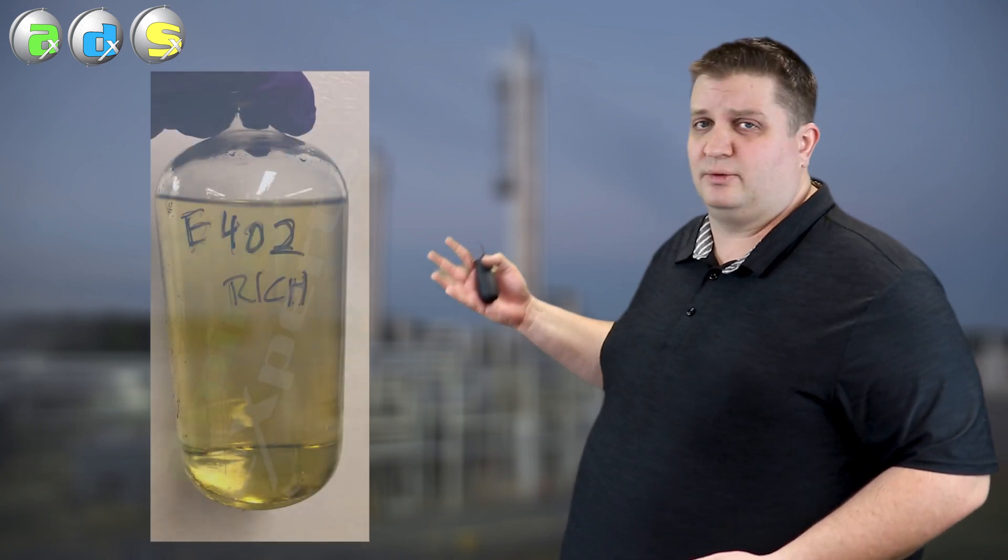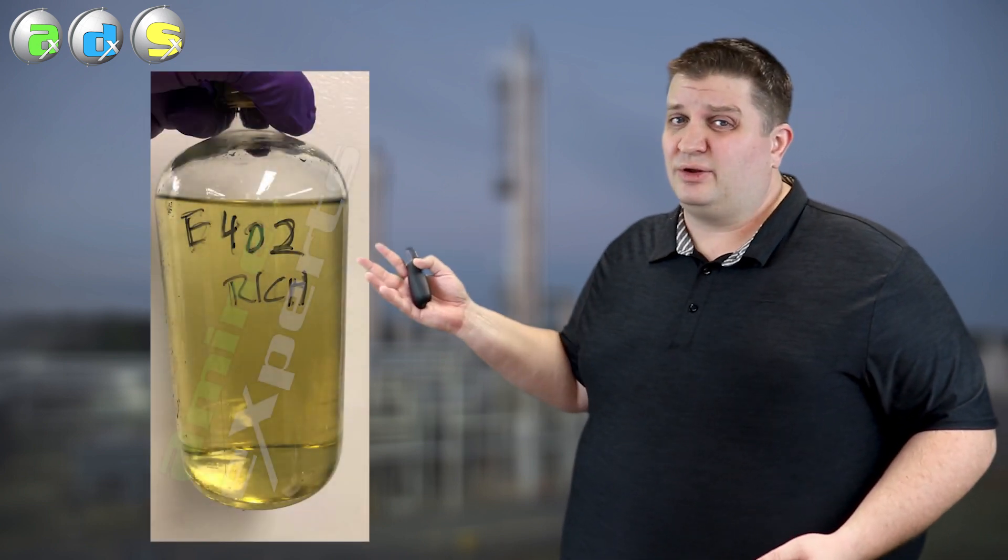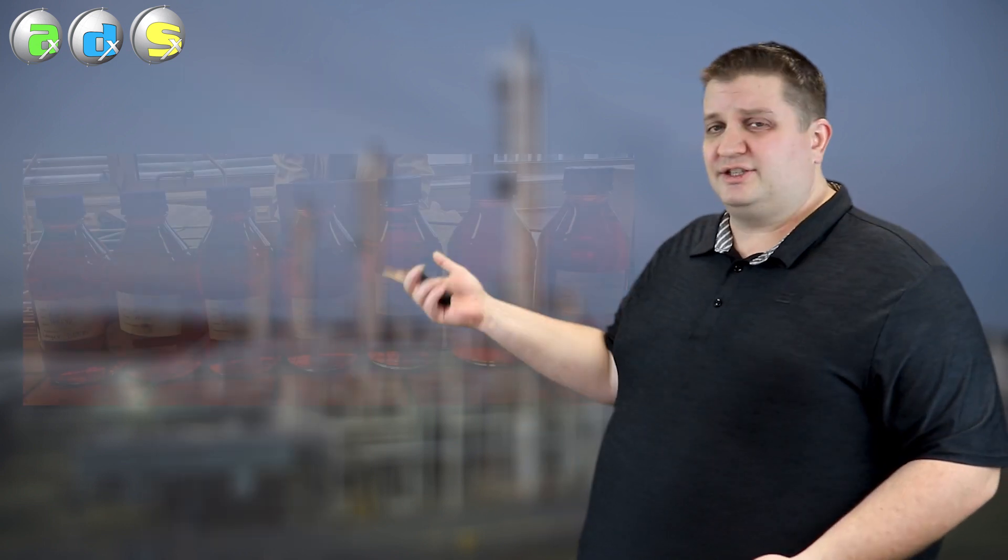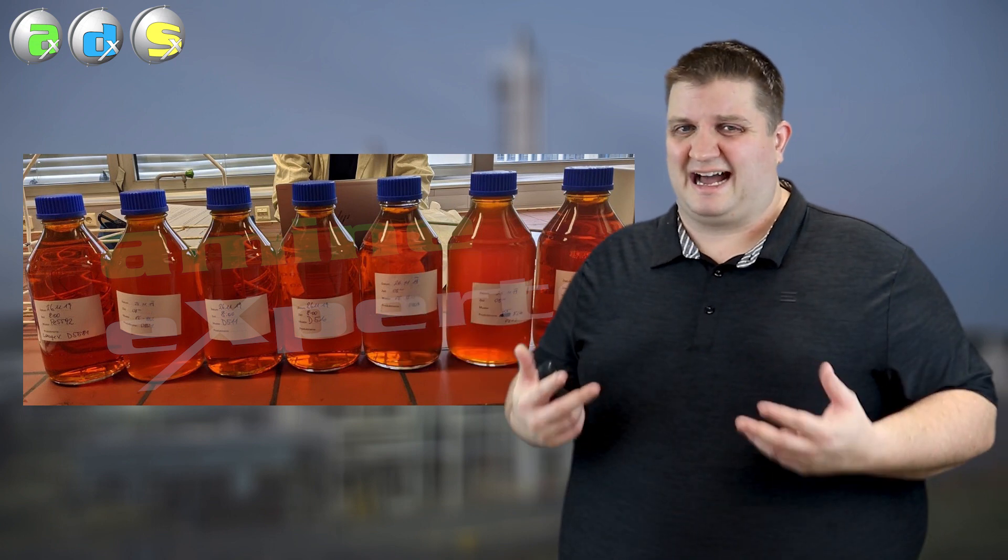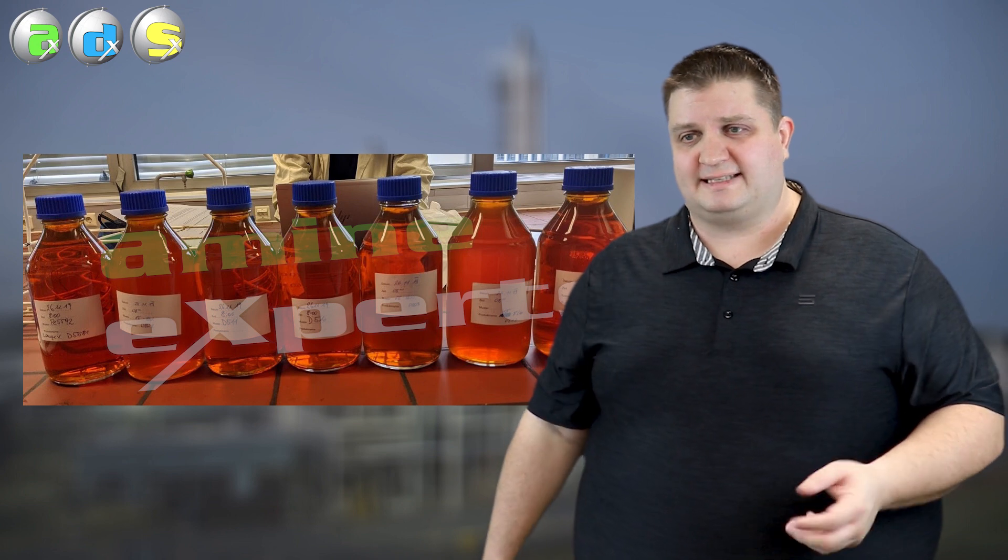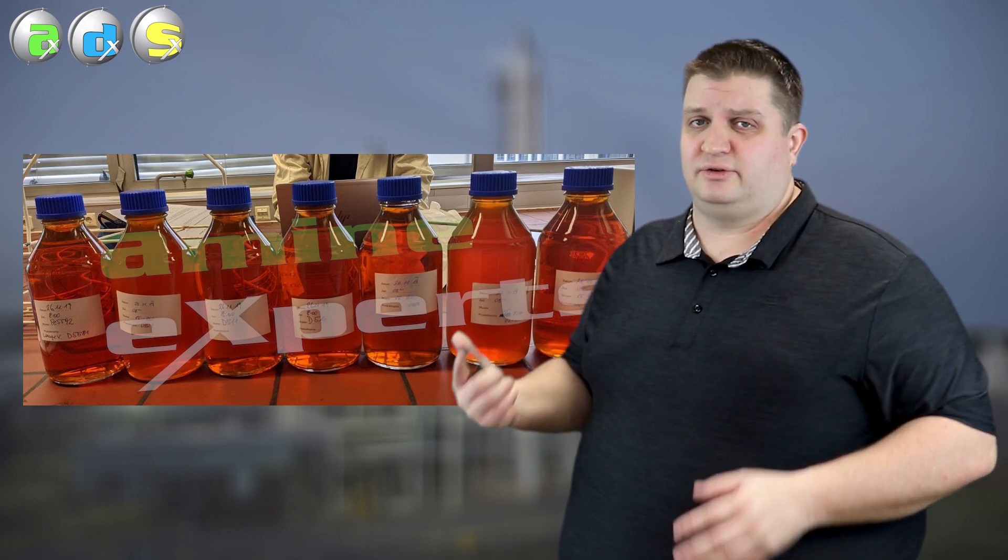Where we start to get issues is when you start to get colorations. The very first thing here we're going to look at is a yellow amine. The yellow amine typically means you've got elemental sulfur going on or you're starting to see low levels of degradation. Eventually it could turn into this which is an orange amine which means you're getting high levels of degradation whether it's oxygen based or thermal based. Either way this is now an issue you need to look at.